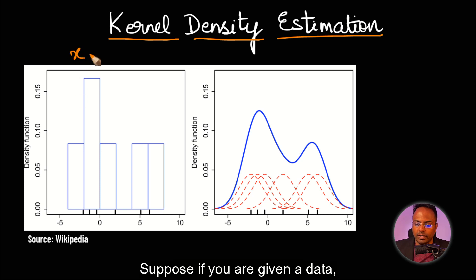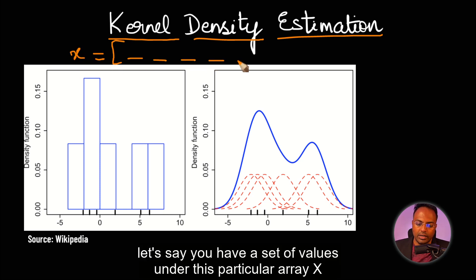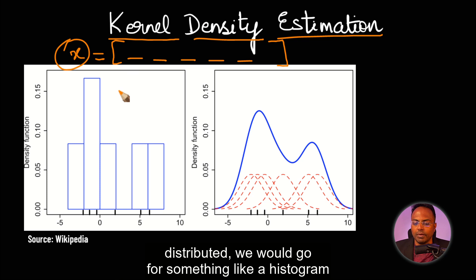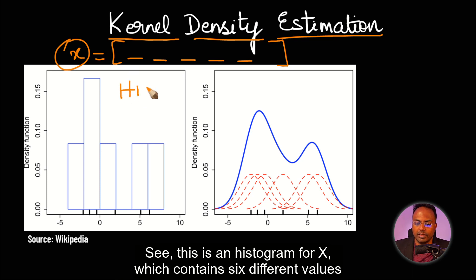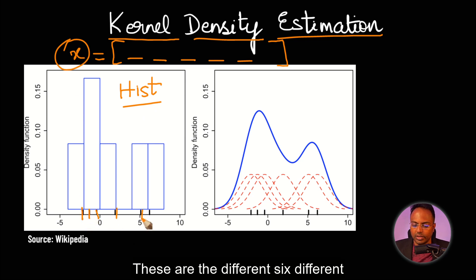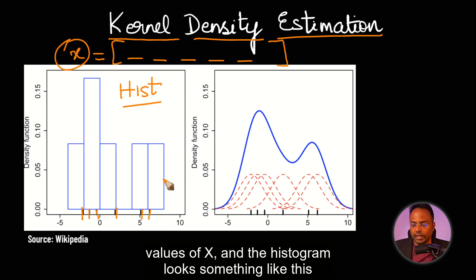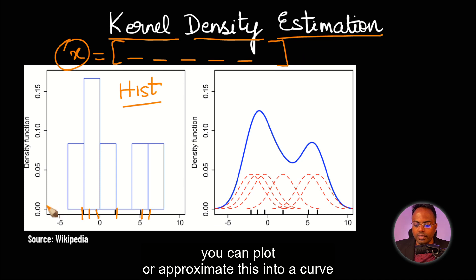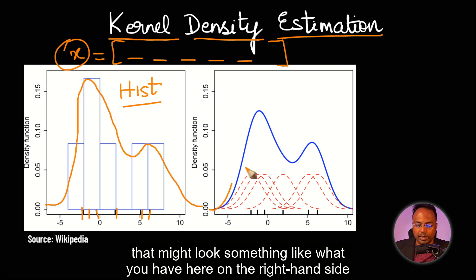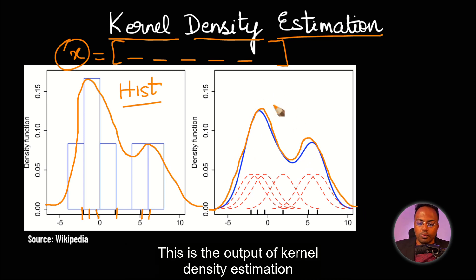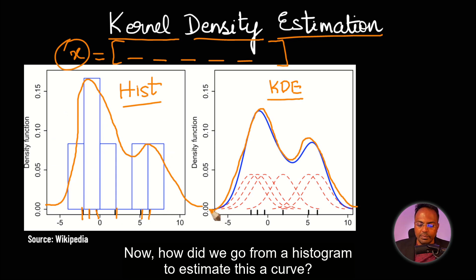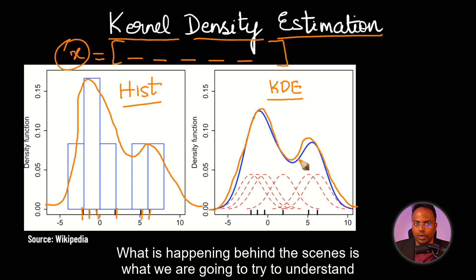Quite straightforward. Suppose if you are given a data, let's say you have a certain set of values under this particular array x. Now, if you want to see how this data is distributed, we would go for something like a histogram. This is a histogram for x which contains six different values. These are the six different values of x and the histogram looks something like this. Now, using kernel density estimation, you can plot or approximate this into a curve that might look something like what you have here on the right hand side. This is the output of kernel density estimation. How did we go from a histogram to estimate this kind of a curve? What is happening behind the scenes is what we are going to try to understand.